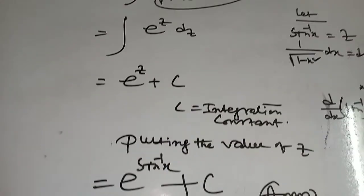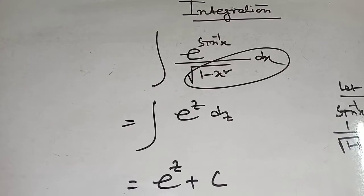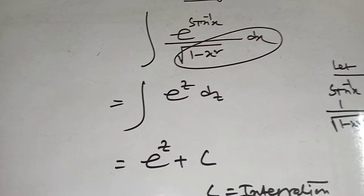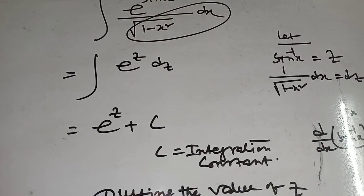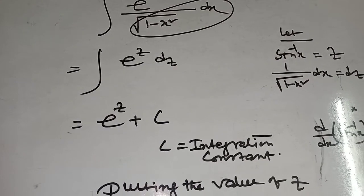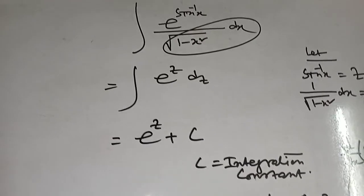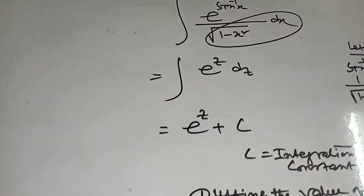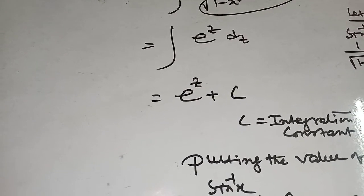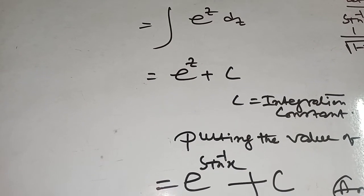Recall: d/dx of sine inverse x means 1 by root over 1 minus x square dx equal to dz. So the integral of e to the power sine inverse x by root over 1 minus x square dx — substituting sine inverse x as z, and dx by root over 1 minus x square as dz — gives integration of e to the power z dz equal to e to the power z plus c. Here c is the integration constant. Putting the value of z back, we get e to the power sine inverse x plus c.